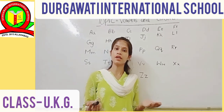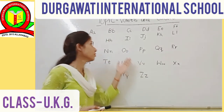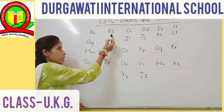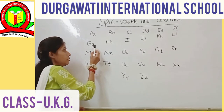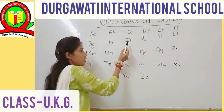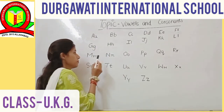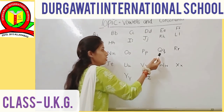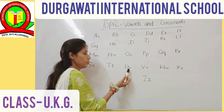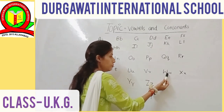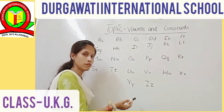Then how many letters are in the alphabet? There are 26 letters in the alphabet. These are A, B, C, D, E, F, G, H, I, J, K, L, M, N, O, P, Q, R, S, T, U, V, W, X, Y, Z. And these are 26 letters.